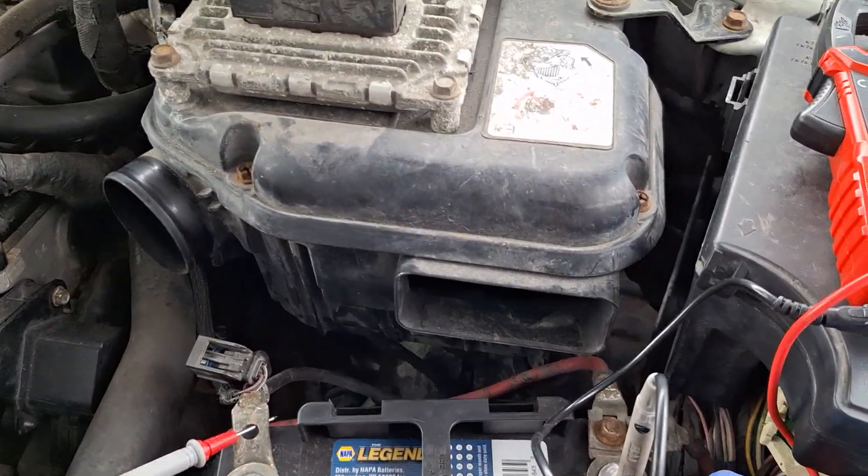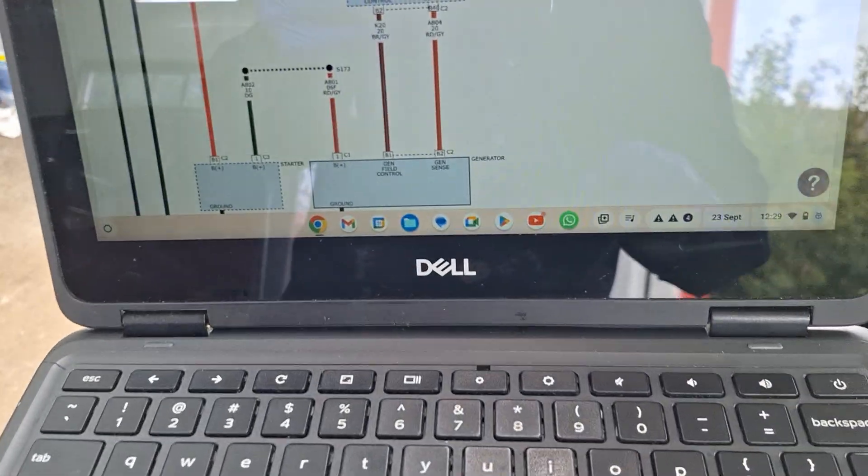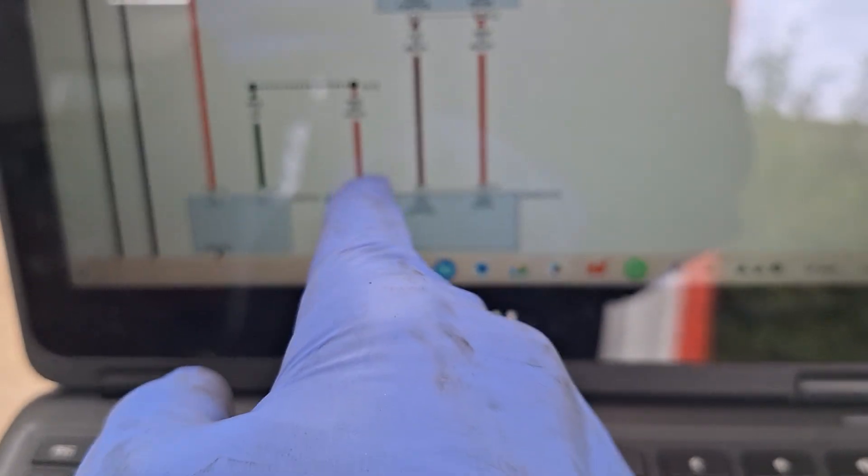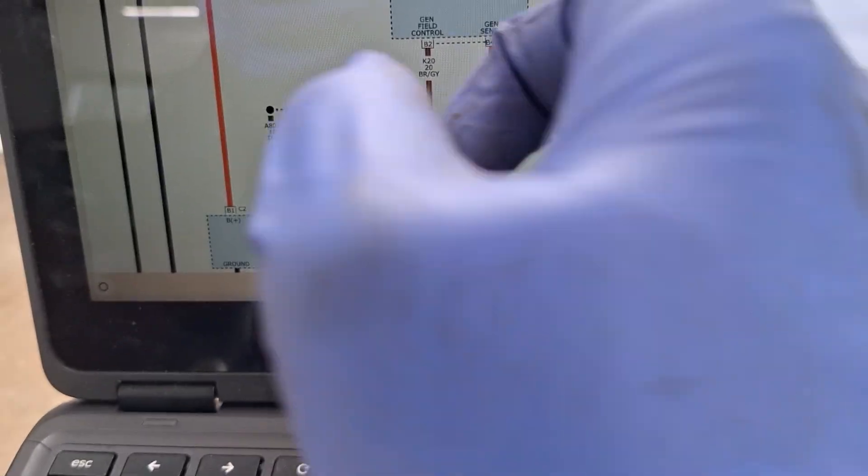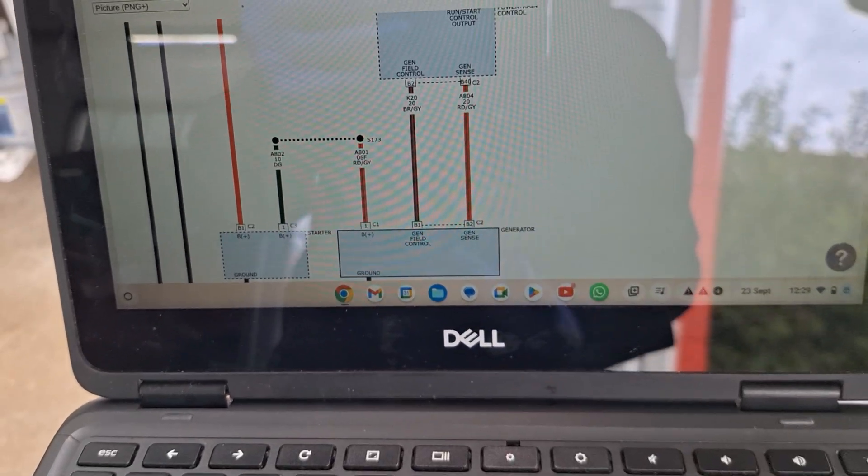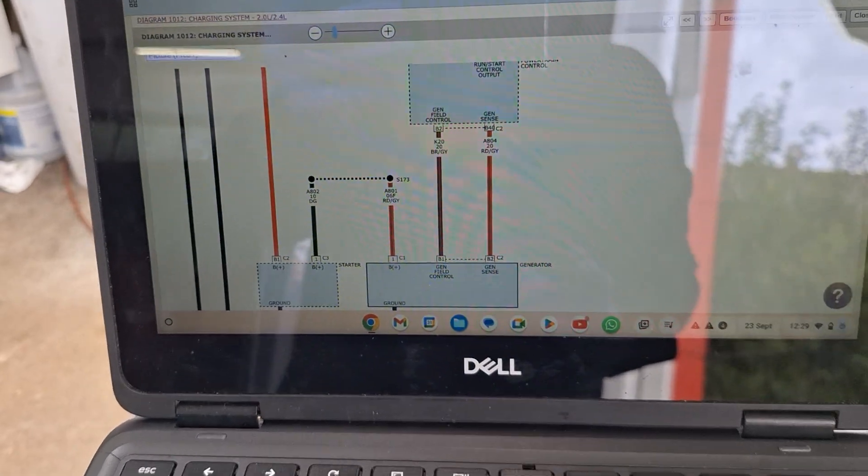I believe that goes to the starter, which it is. So let's hook up our voltmeter there and the other side of the lead is going to be battery positive. Red lead is going to be on battery positive and the second lead is going to be on this connector right there. So we'll be doing a voltage drop, should have close to zero voltage if it's working correctly.